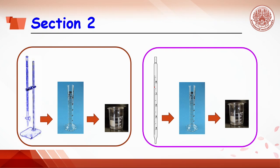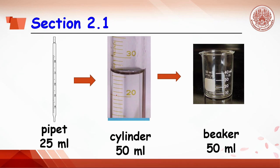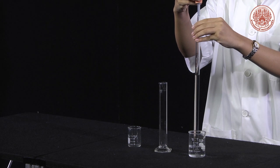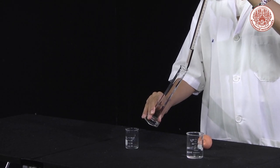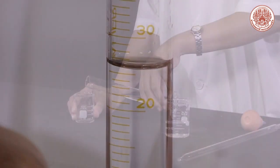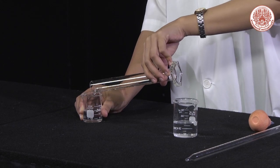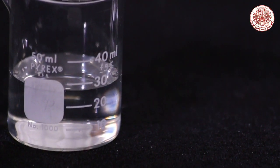In Section 2, students will learn to use different volume measuring devices including burette, pipette, cylinder, and beaker, recording volumes based on significant figure rules. In Section 2.1, pipette 25 ml of tap water and transfer it to a 50 ml graduated cylinder. Read the volume in the cylinder based on significant figure rules, then transfer the water from the cylinder to a 50 ml beaker and read the volume from the beaker.